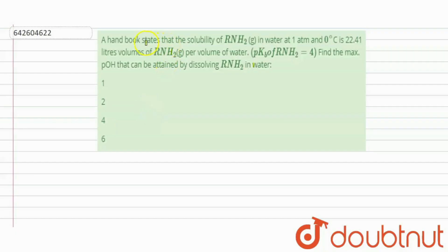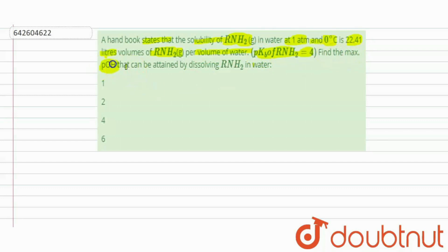Hi everyone, let's take a question here. The question says that a handbook states that the solubility of RNH₂ gas in water at 1 atmospheric pressure and 0 degree Celsius is 22.41 liters volume of RNH₂ gas per volume of water. The PKB of RNH₂ is equal to 4.